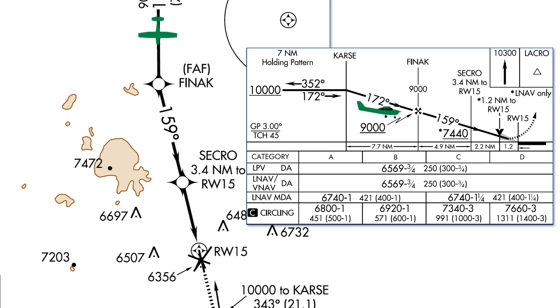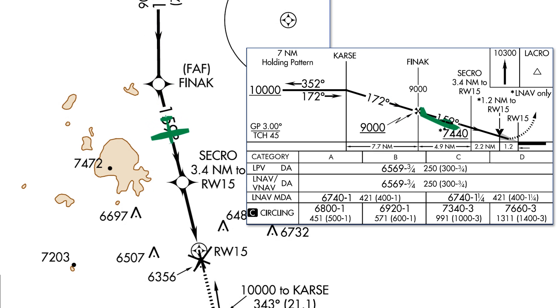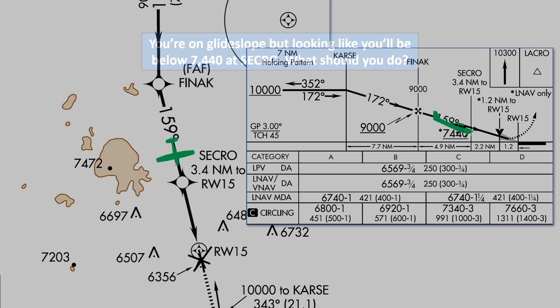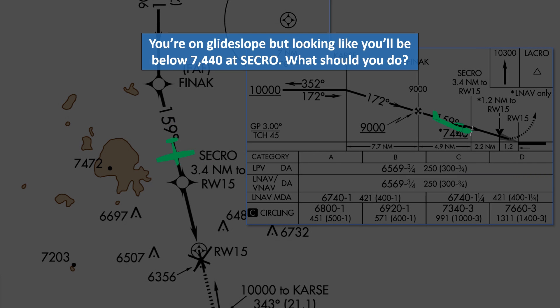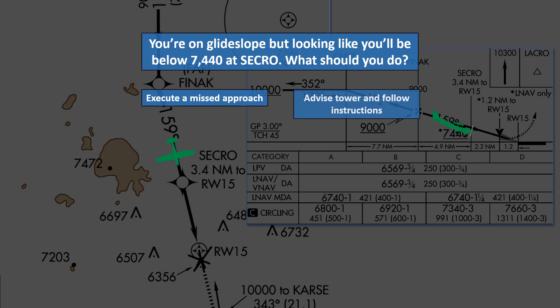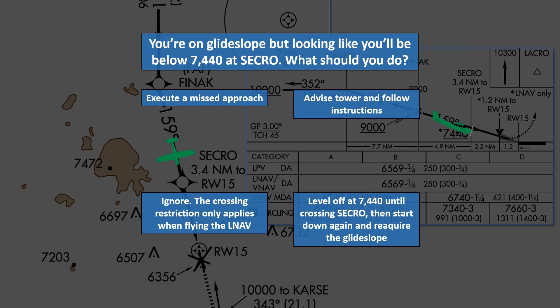Now we start towards Finac, holding 9,000 until the glide slope comes in and then begin following that down. We notice that our altimeter reads a bit low. Question 5: Although you're on the glide slope, it looks like we'll be below 7,440 at C-CRO. What should you do? Execute a missed approach. Advise tower and follow instructions. Ignore — the crossing restriction only applies when flying to LNAV minimums. Or, level off at 7,440 until crossing C-CRO, then start down again and reacquire the glide slope.